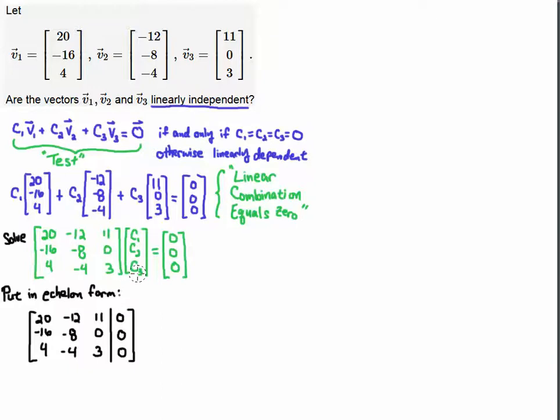Now if the system has a unique solution where c1, c2, and c3 are all zero, then I know that my vectors are linearly independent. However, if I get something that's not zero, then I know that my vectors are dependent. So let's solve this system.